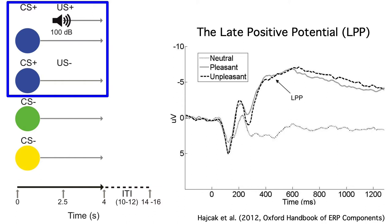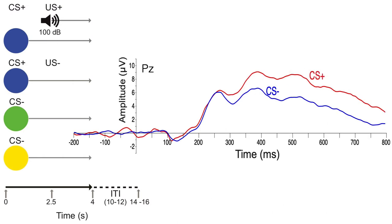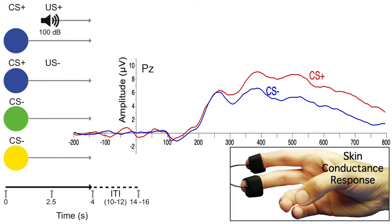Now I can finally show you the results. As predicted, the LPP was larger for the CS plus color than for the CS minus colors. The CS plus waveform shown here is from the 50% of trials on which the CS plus wasn't followed by a noise burst — the CS plus US minus trials. But the same thing was found on the CS plus US plus trials. Felix also found a larger skin conductance response for the CS plus, but the response of the skin was delayed for several seconds.